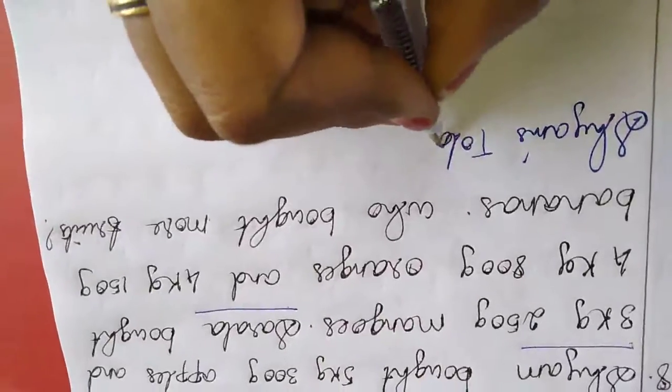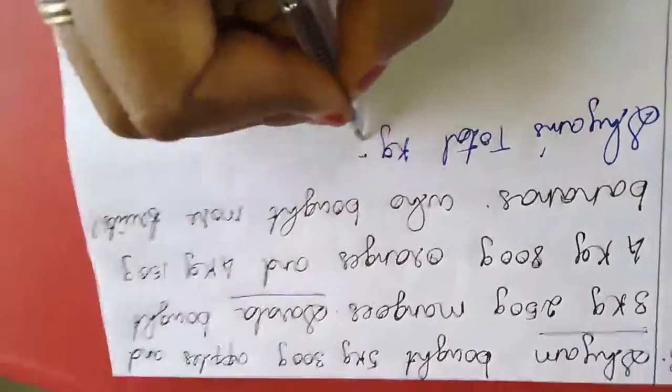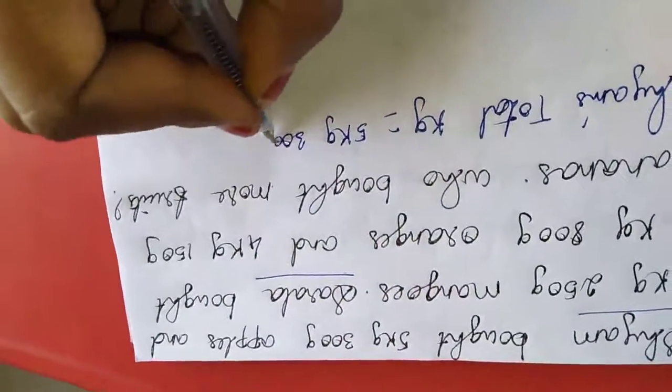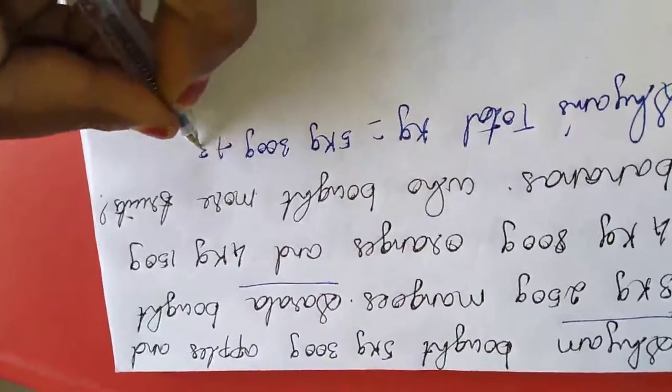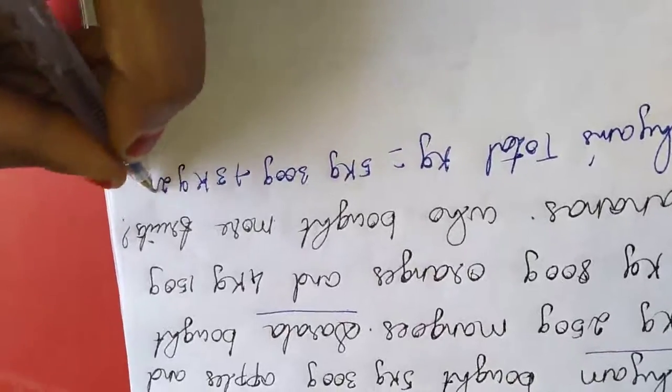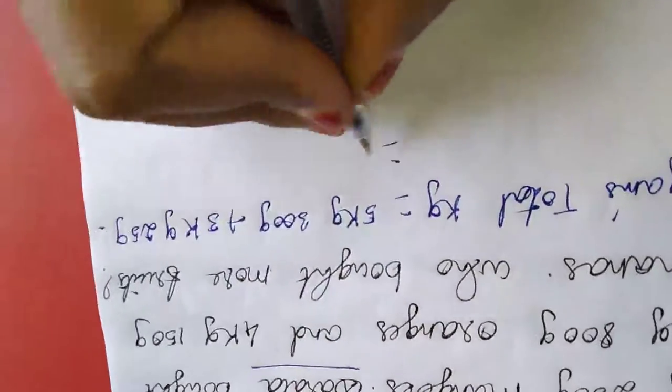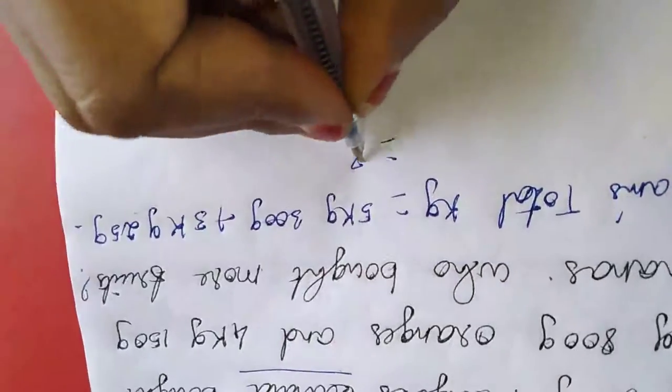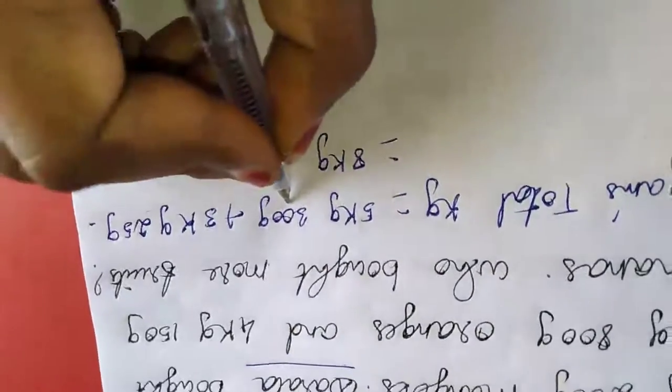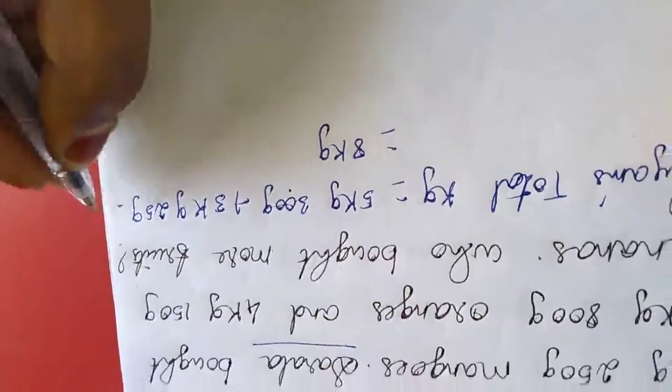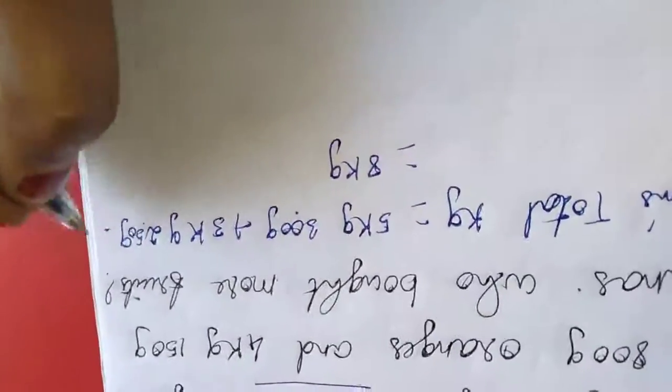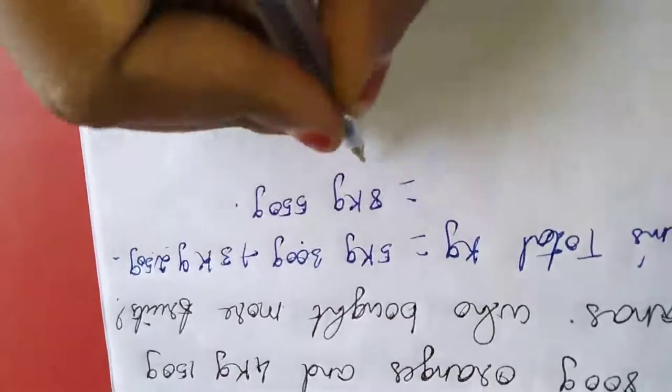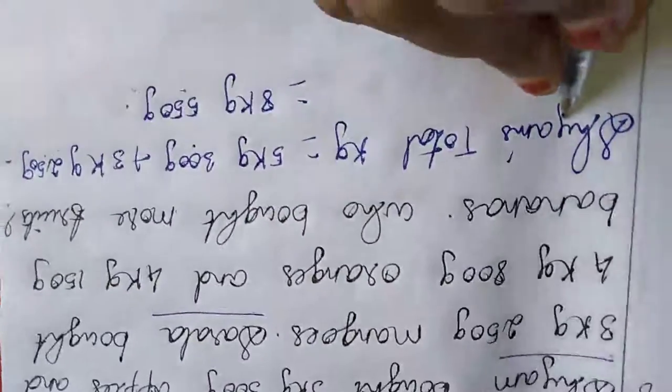So we want to find out Sham's total kg. We want to add 5 kg 300 g plus 3 kg 250 gram. Kilogram, you have to write with kilogram. So 5 plus 3 is 8 kilogram. 300 gram, 250 gram, we will get 550 gram. So total is 8 kilogram, 550 gram for Sham.